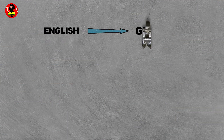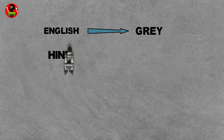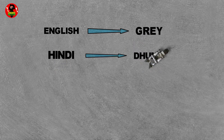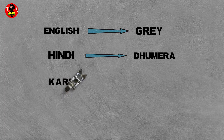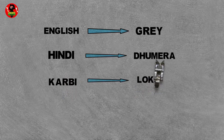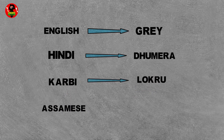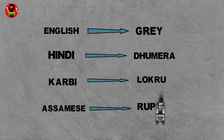English: Gray. Hindi: Dhumira. Karbi: Lokuru. Assamese: Rupali.